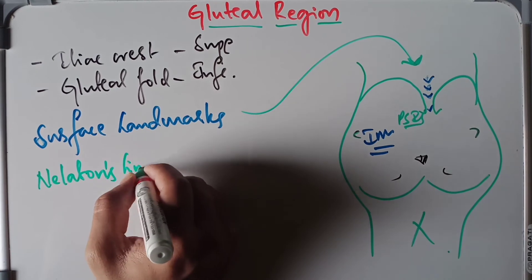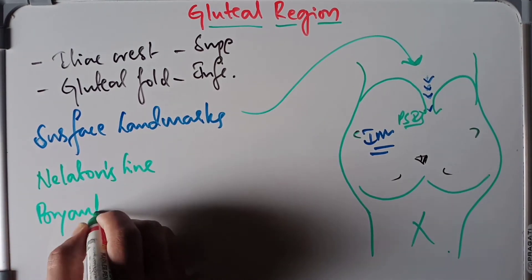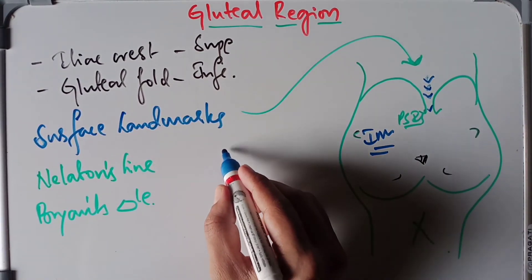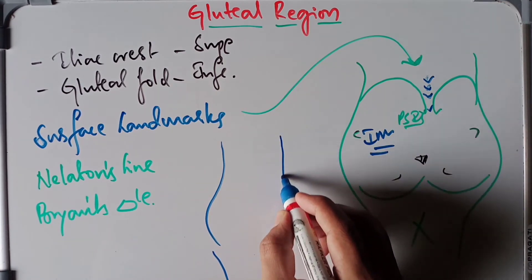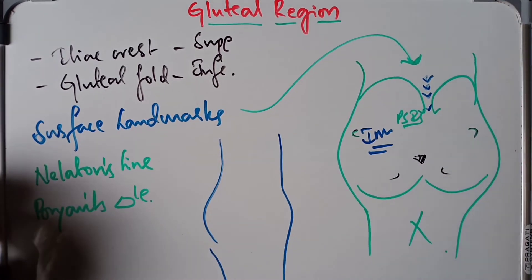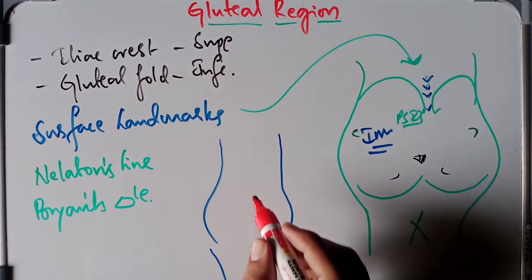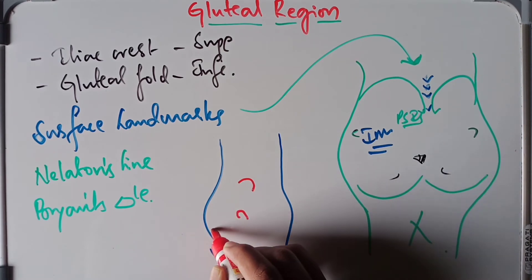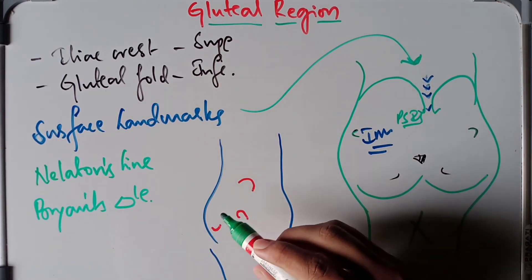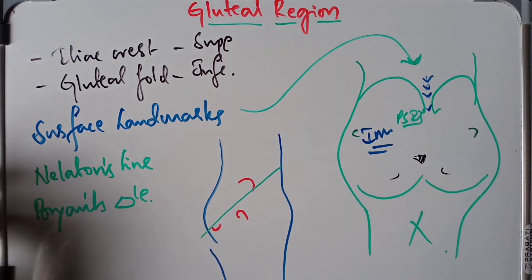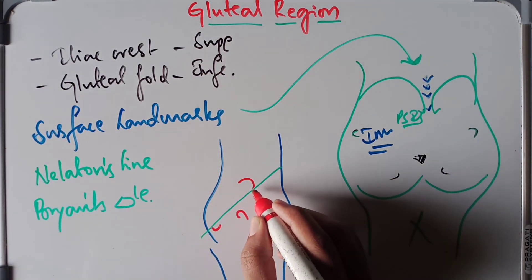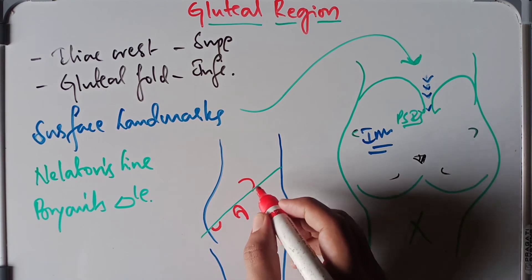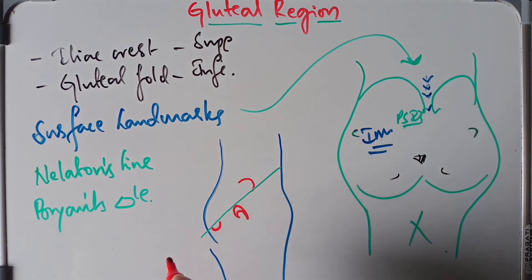Now we look at Nelton's line and Bryan's triangle. In the lateral view of the human body, we have the anterior superior iliac spine of the hip, the tip of the greater trochanter, and the ischial tuberosity. The line that passes through the tips of all three landmarks is known as Nelton's line.